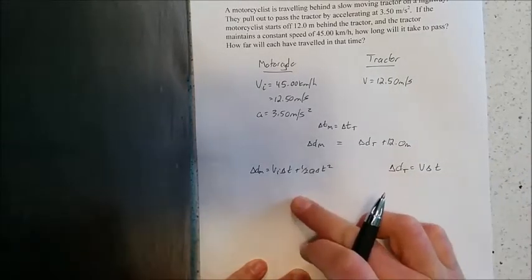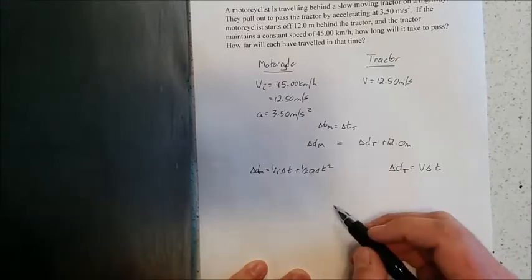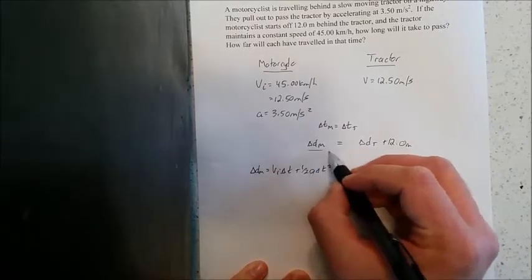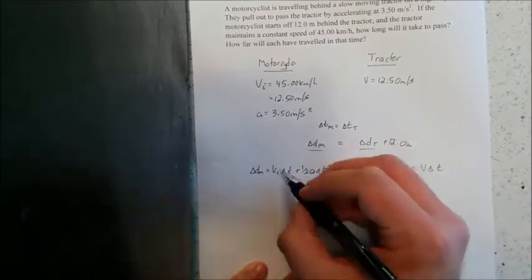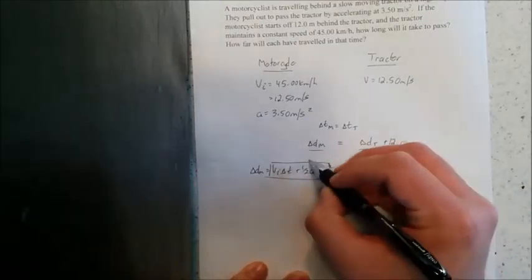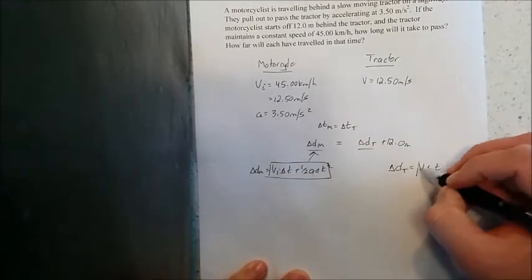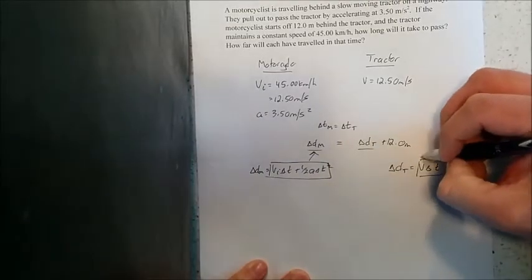Again independently these equations by themselves are not useful. But if I go back to my condition, the distance of the motorcycle equals distance of the tractor, I've already expressed what those are. So I'm going to take that equation and insert it and same thing for the tractor.